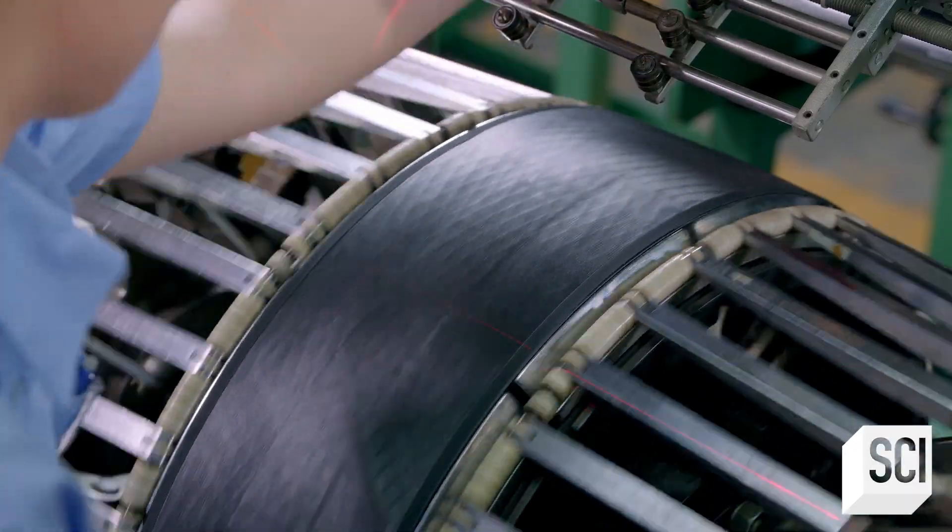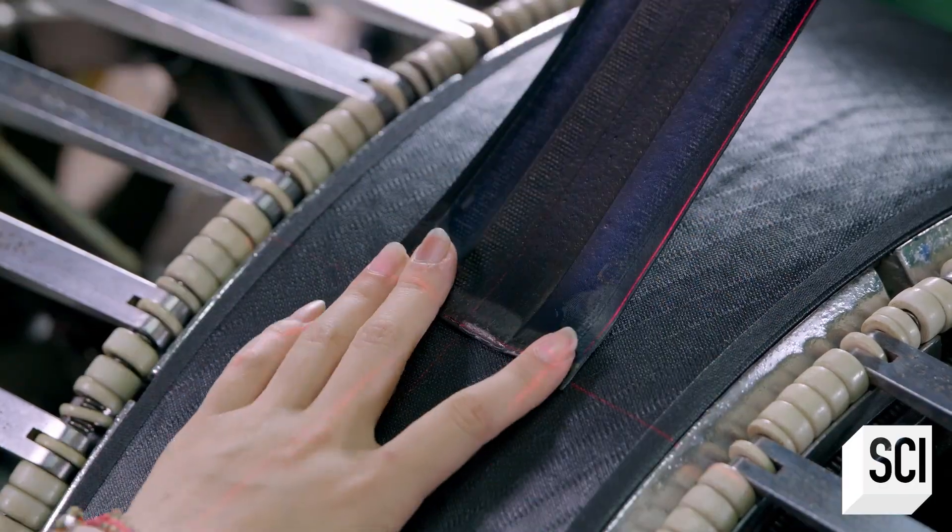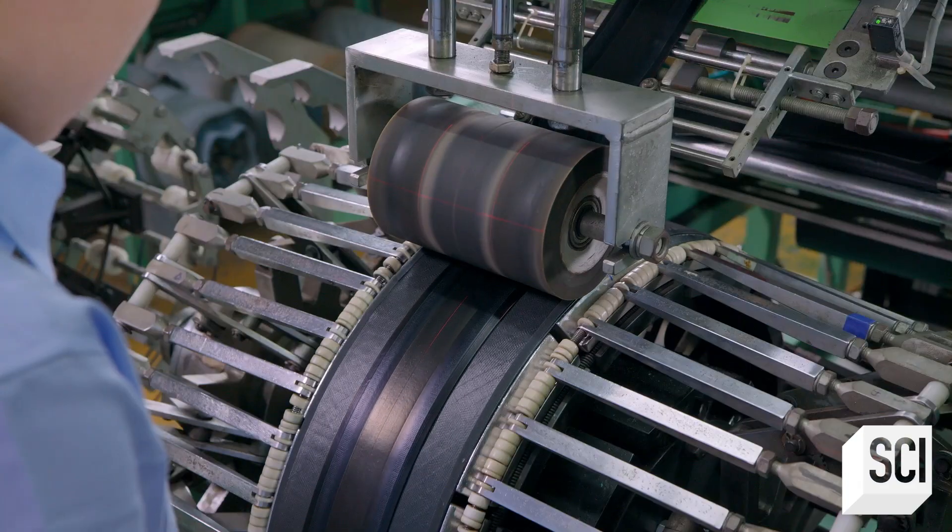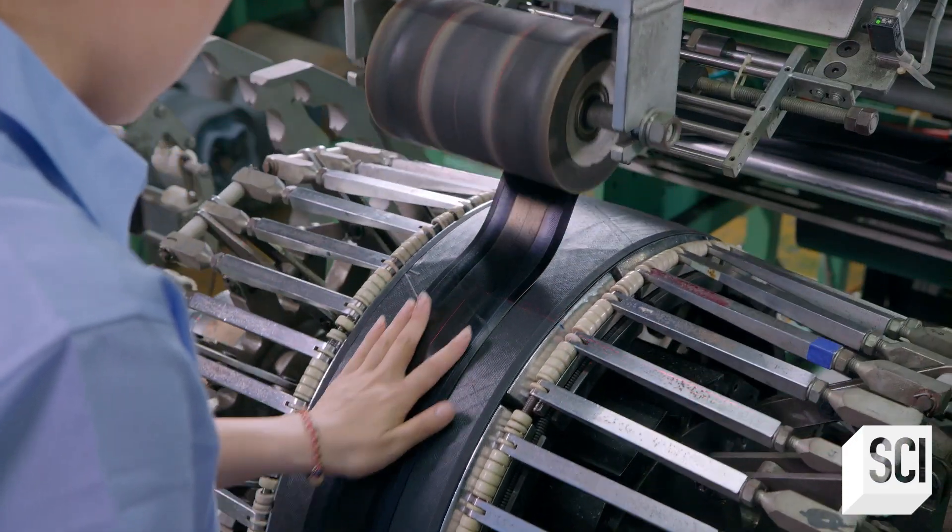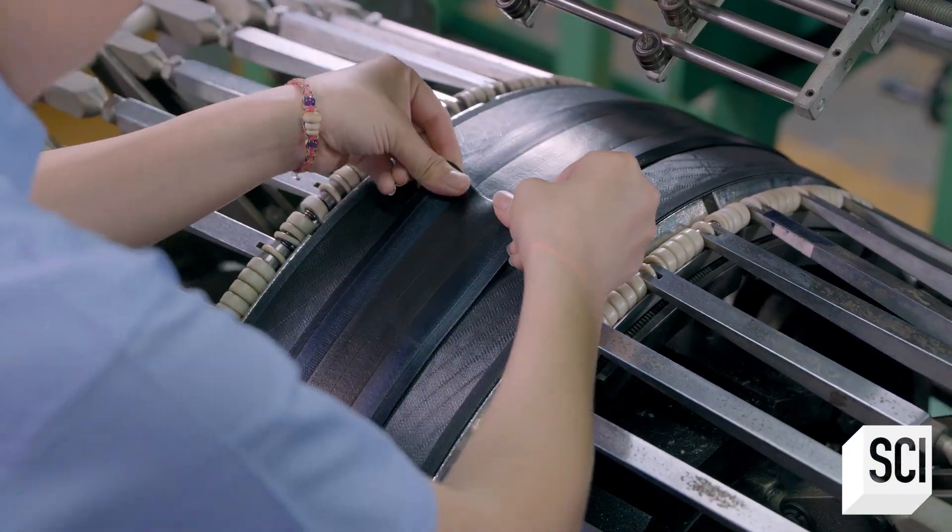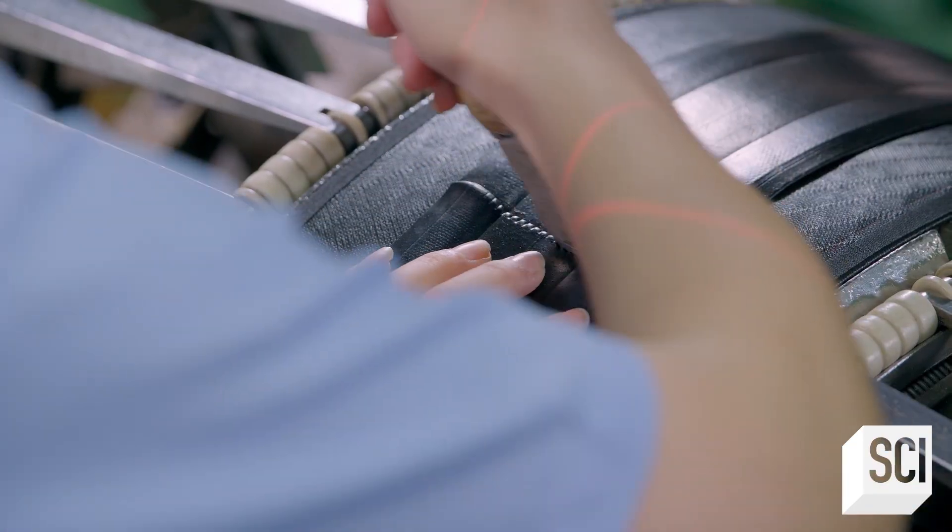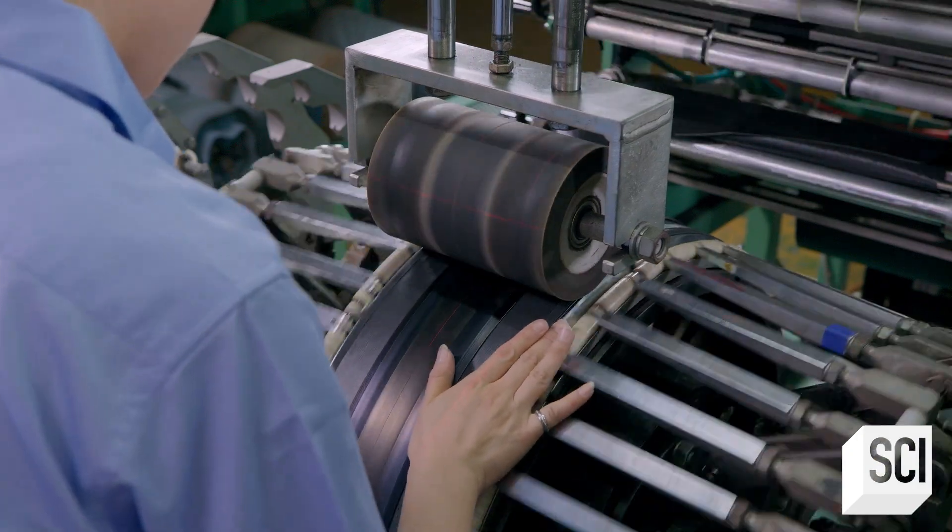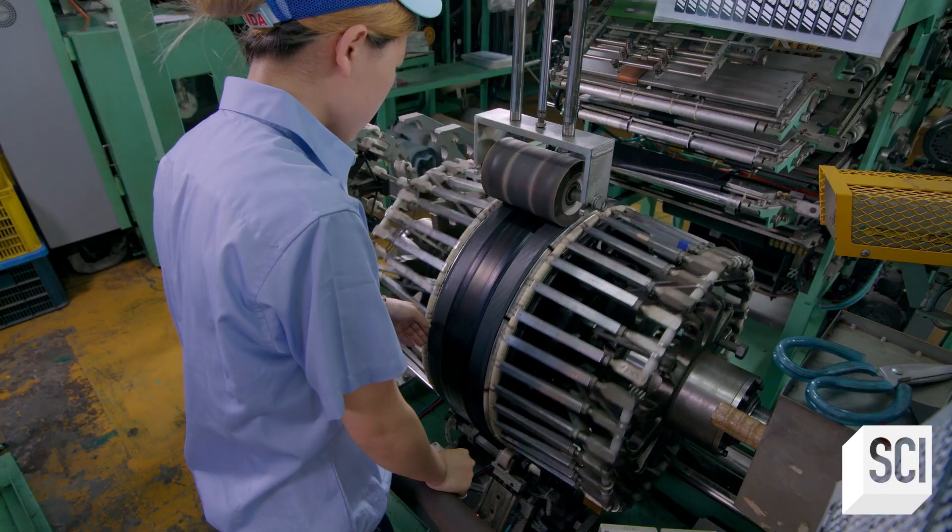The tread rubber is placed in the center. A roller applies pressure as the drum spins to wind the tread around the casing. The ends are pressed together manually, and one more turn of the drum secures the tread rubber to the casing.